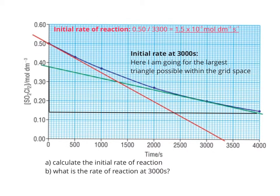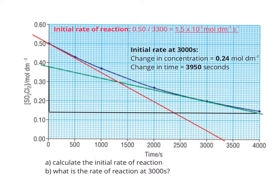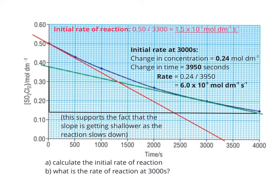For the rate at 3,000 seconds, to do dy over dx this time I'm going for the largest triangle possible within the grid space. My change in concentration this time is 0.38 minus 0.14 moles per decimeter cubed, which gives me 0.24 moles per decimeter cubed, and my change in time is 3950 seconds, which gives me 6.0 times 10 to the minus 5 moles per decimeter to the minus 3 seconds to the minus 1. This would support the fact that the slope is getting shallower as the reaction slows down.